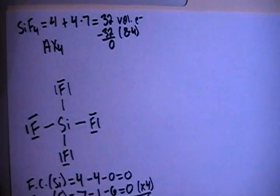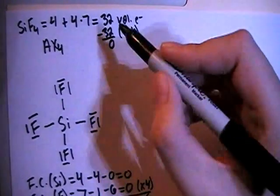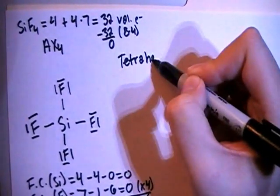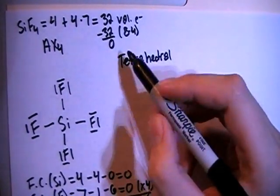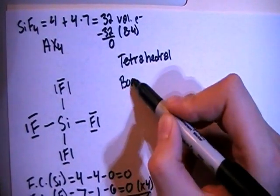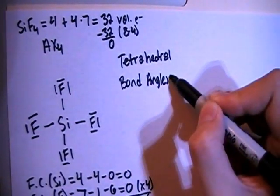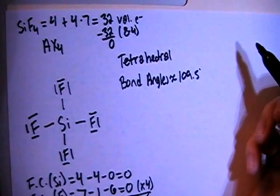Now in terms of shape, with the AX4 structure that means that this is going to have a tetrahedral shape. And when you have a tetrahedral shape, the bond angles are going to be approximately 109.5 degrees.